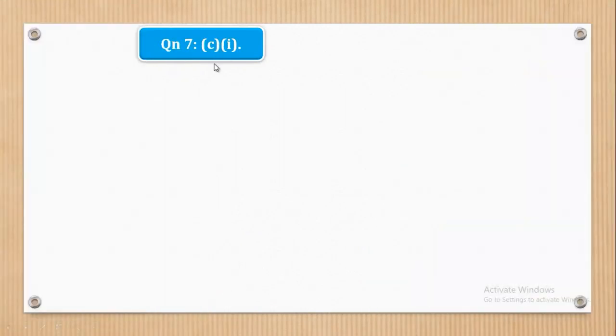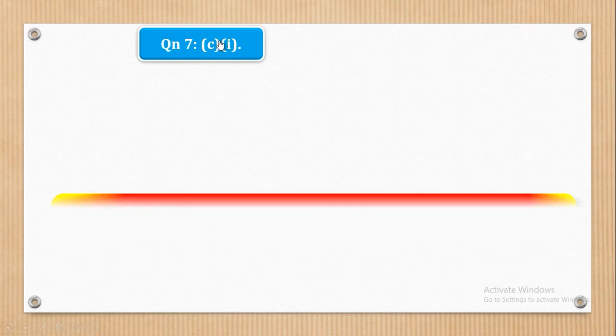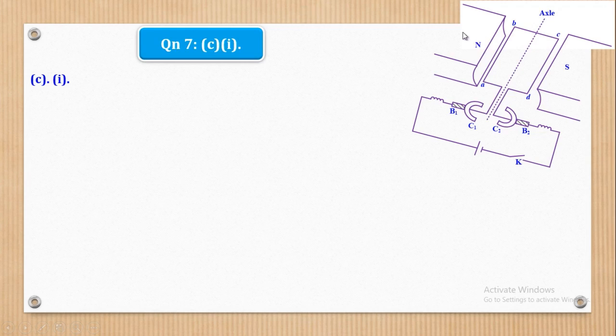Now we shall go to Part C, Roman 1. Part C Roman 1 says, briefly explain the operation of a DC motor and they give it six marks. So the first thing is to draw a well-labelled diagram. So this is the diagram of a DC motor, but you have to label all these parts. The A, B, C, D, what is it? B1, B2, what is it? And C1, C2, what is it? So the first thing to do is to label.